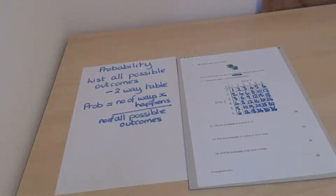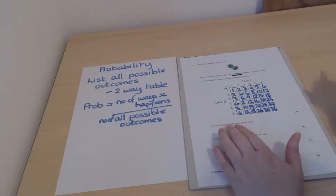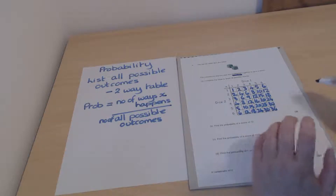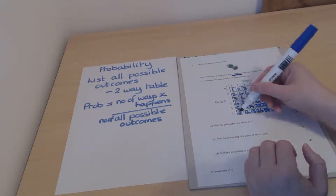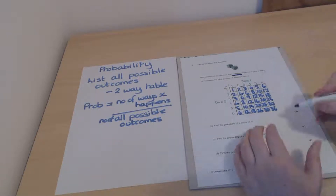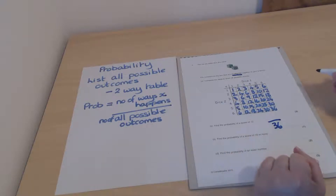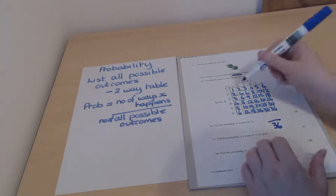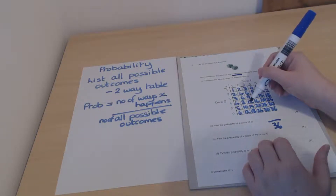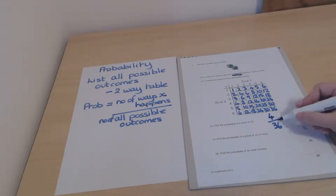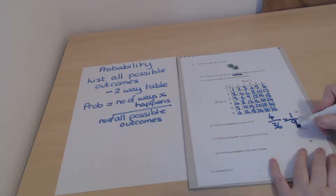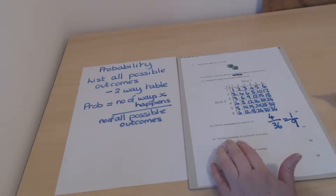With the grid filled in, we can answer the questions. The first asks for the probability of a score of 12. With 6 options each way, there are 36 total possibilities, so the denominator is 36. Counting the 12s in the table: 1, 2, 3, 4 — there are four. So the probability is 4/36, which simplifies to 1/9 by dividing top and bottom by 4.